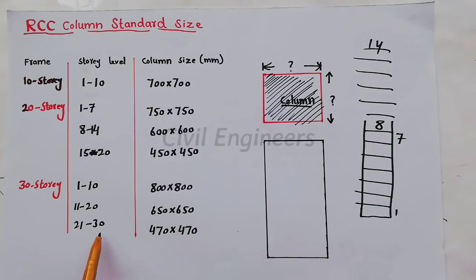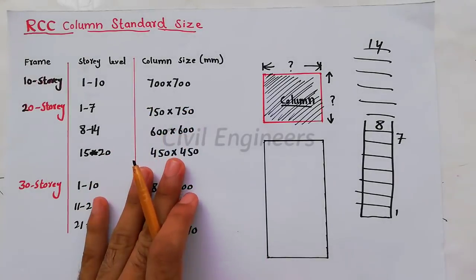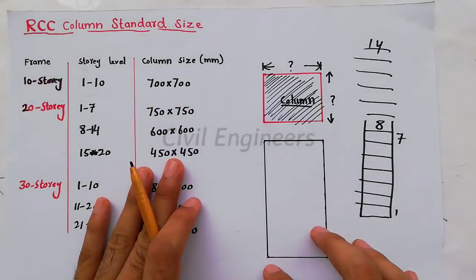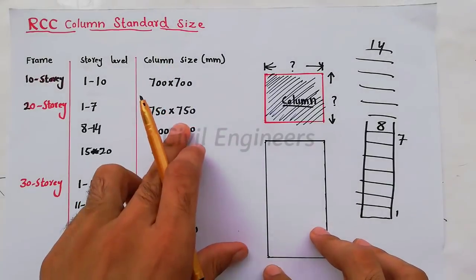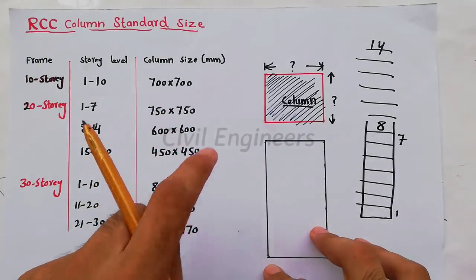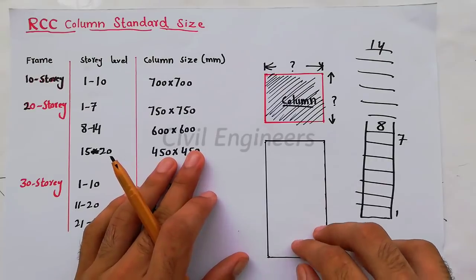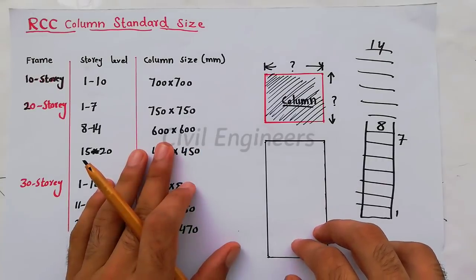From 21 to 30, we have to take 470mm by 470mm. So this is the important topic for today which I have discussed in front of you. If you have any problem in this video or any question, please comment. I will try to reply to your answer. Thanks for watching. See you in the next video.